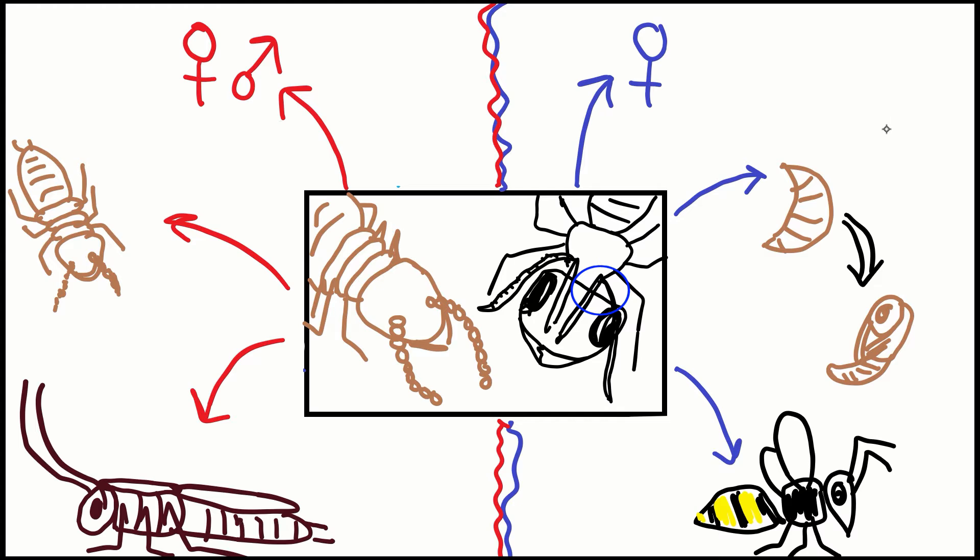Physically, an ant is going to have antennae that bend like an elbow, and a termite is going to have antennae that look like a string of beads.